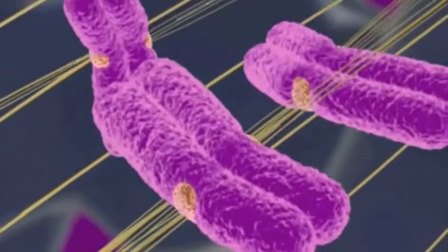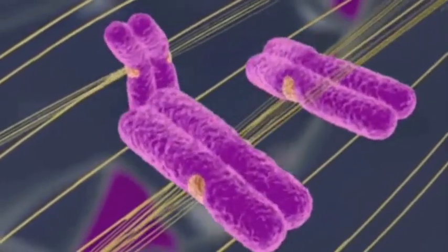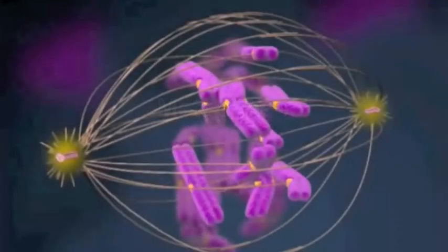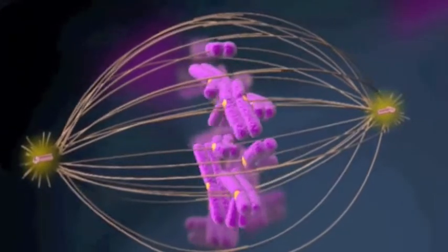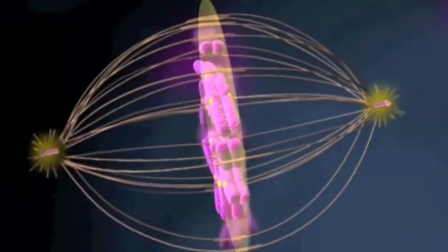As the chromosomes are bound by spindle fibers from opposite poles, they move first one way and then another. The counteracting forces of the spindle eventually cause all the chromosomes to end up at the center of the cell, as if arranged on an imaginary plate.